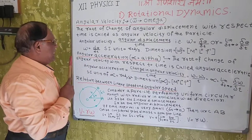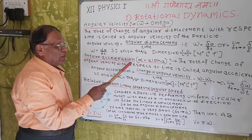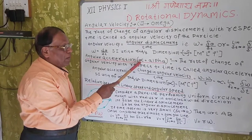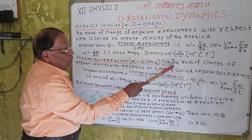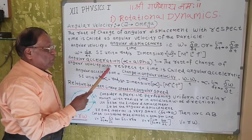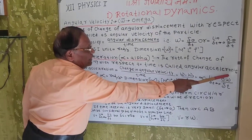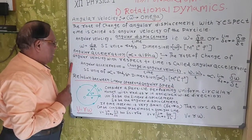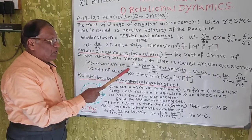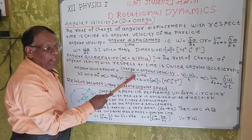Now, the second definition we are going to study is angular acceleration. It is denoted by the letter alpha. The rate of change of angular velocity with respect to time is called angular acceleration. The formula is: angular acceleration equals change in angular velocity divided by time.